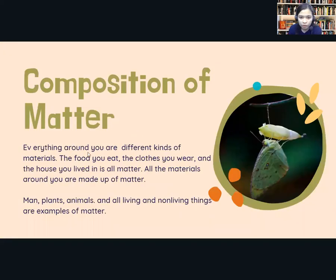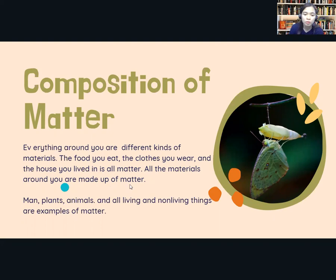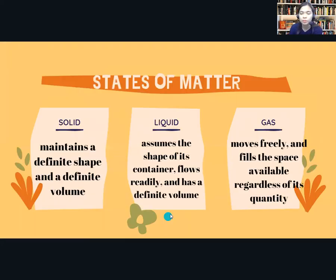Composition of matter — everything around you are different kinds of materials: the food you eat, the clothes you wear, and the house you live in is all matter. All the materials around you are made up of matter. Man, plants, animals, and all living and non-living things are examples of matter. We have three states of matter: solid, liquid, and gas.